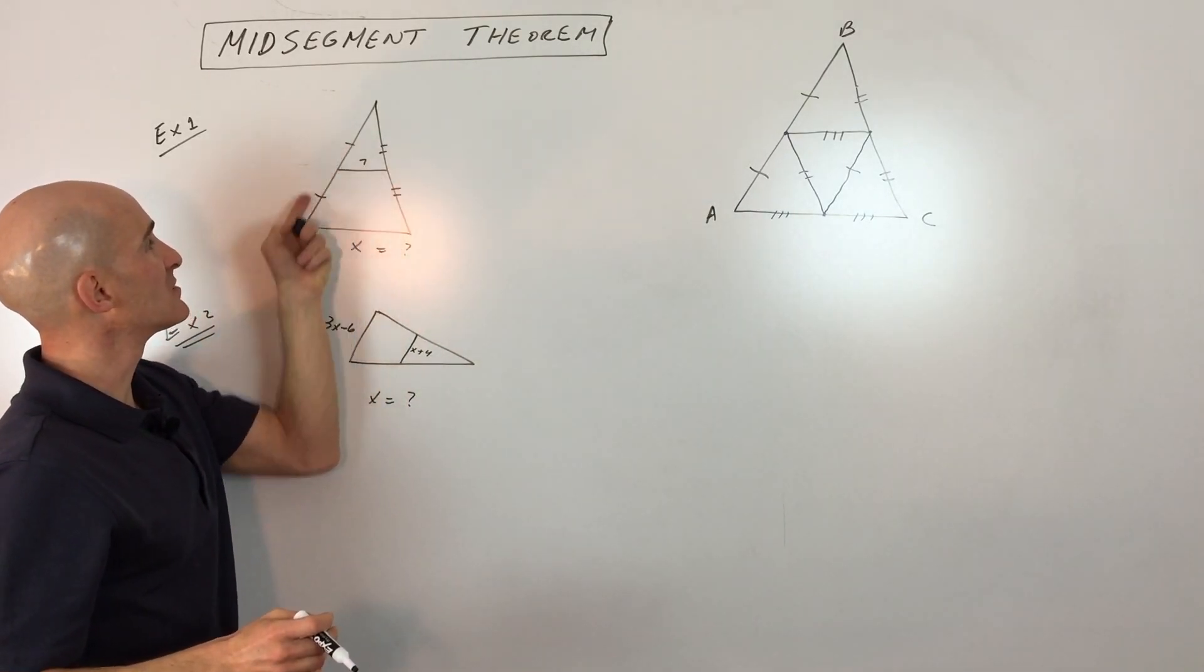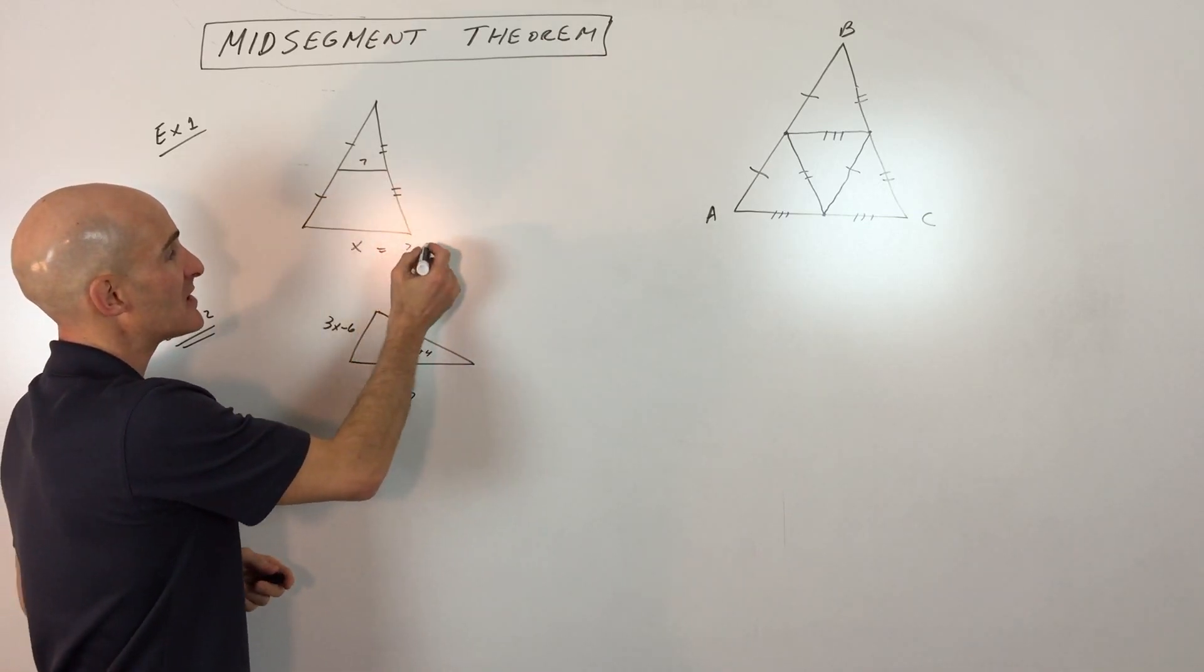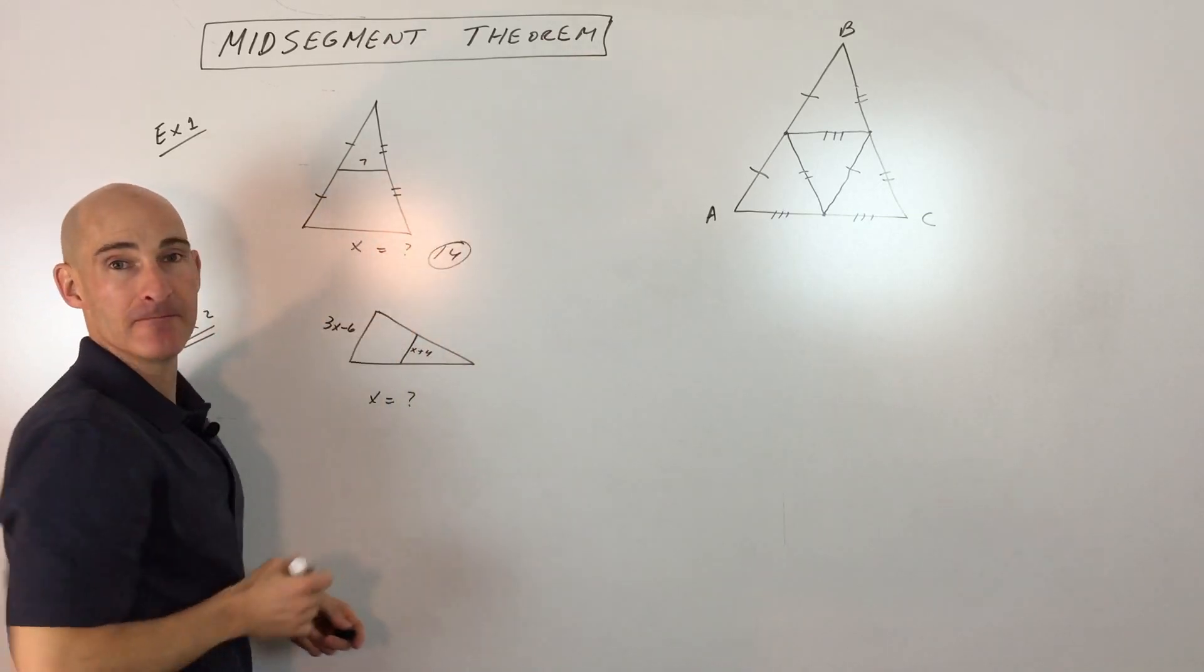So here we've got a midsegment. You can see that these are the two midpoints that are connected there. So if this is 7, that means that this base must be double. It must be 14, right?